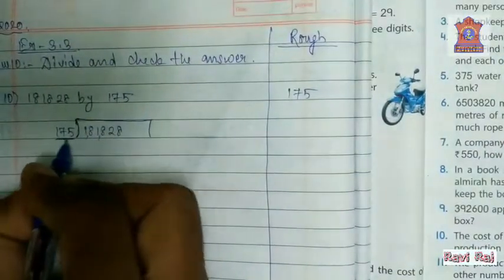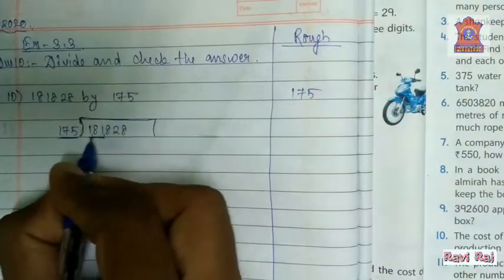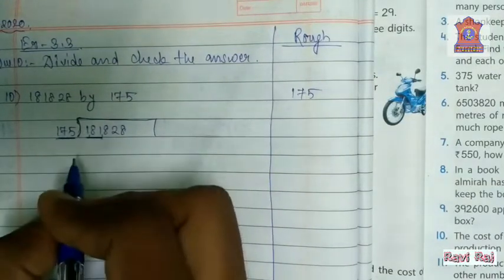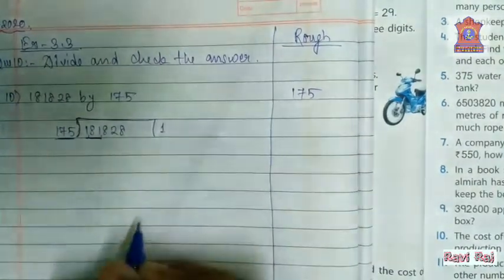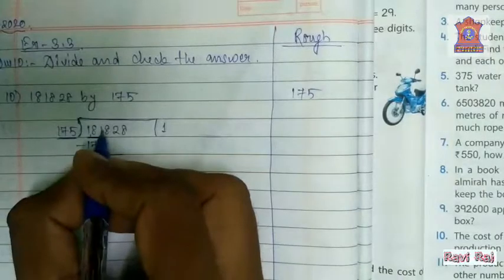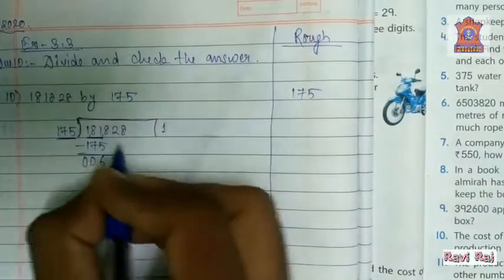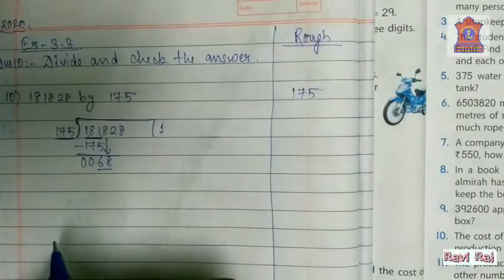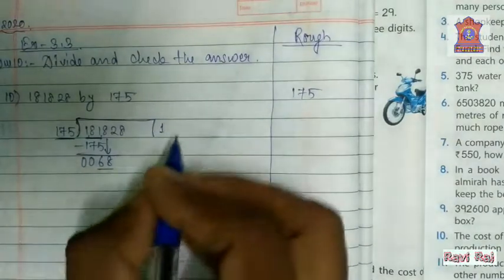175 is a three-digit number, so it will divide the first three digits. Check: 181 is greater than 175 or not. Here it is clearly visible that 181 is greater than 175. So take 175 ones are 175. Now, 11 minus 5 is 6, 7 minus 7 is 0, and here also 0. What comes down? 8. Now, 68 is a two-digit number. We cannot divide a two-digit number by a three-digit number.